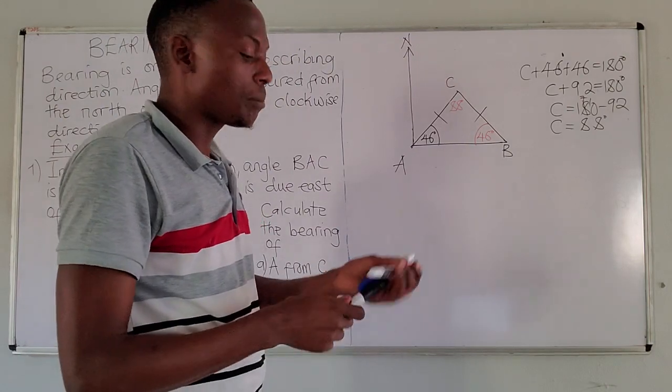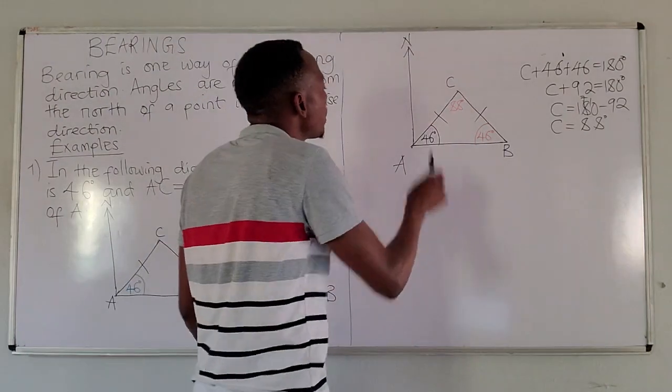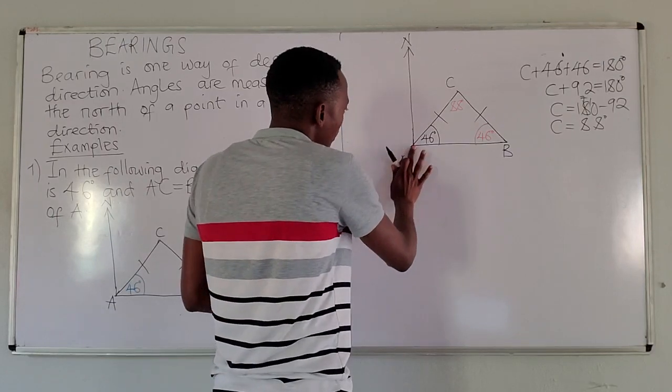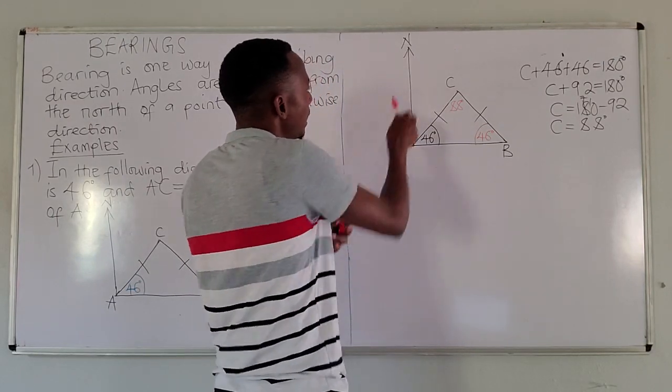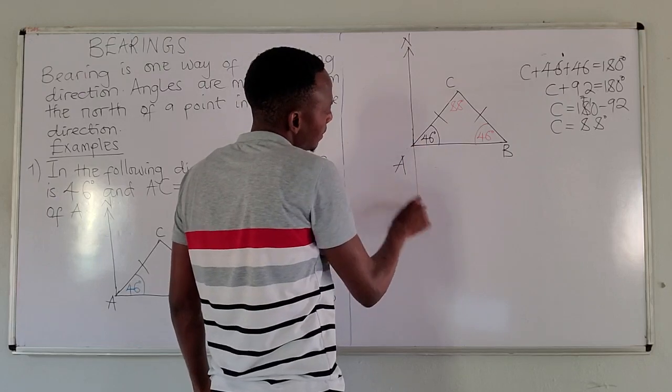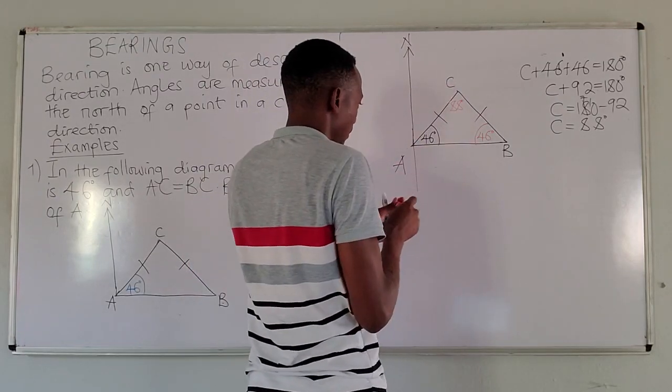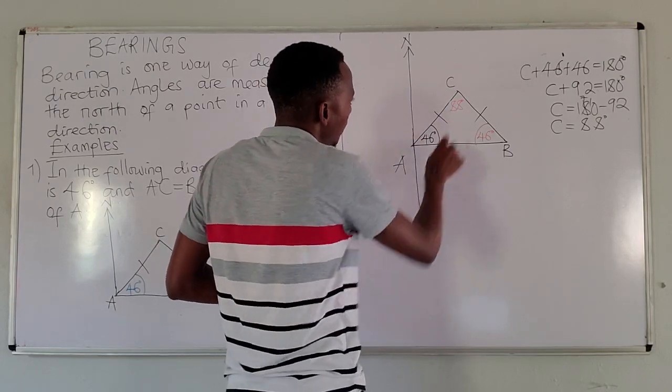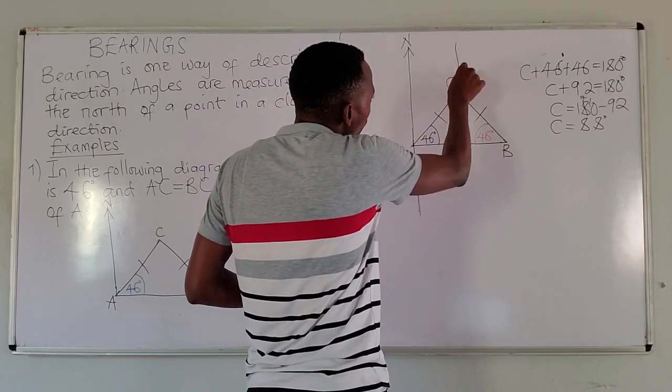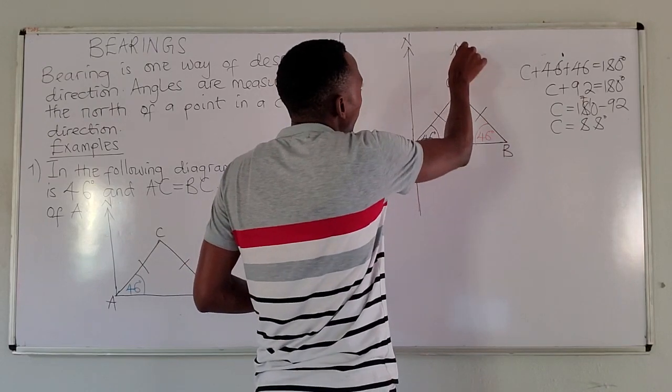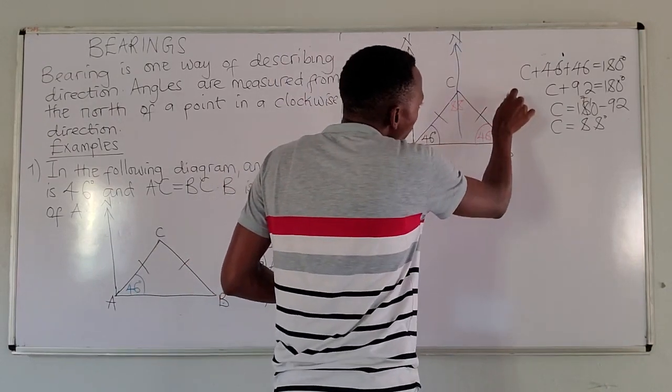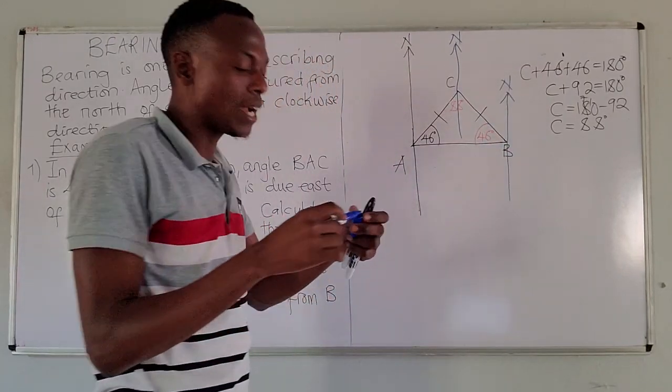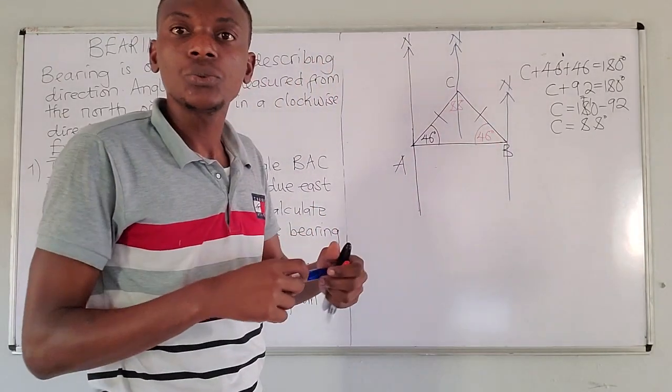Another point we shouldn't forget: make sure that at all the given points you add the norths. If it's a line which is directed, you extend it. We extend this line. On C, you have to draw a north. On B, you also draw a north. These help us to find the solutions.